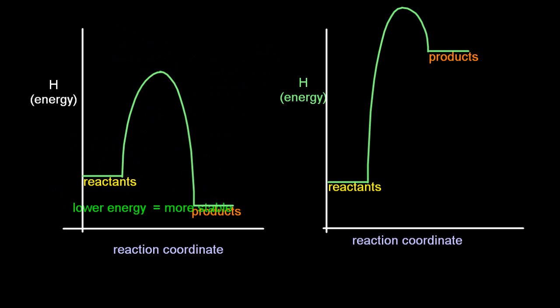So lower energy is more stable, that's like a universal truth. And so there the products have a lower energy, the products are more stable. But on that diagram, the reactants have a lower energy, and so they're more stable.